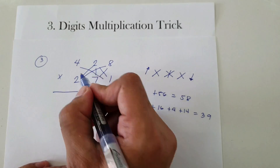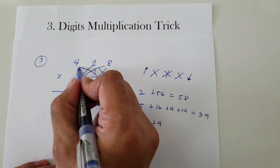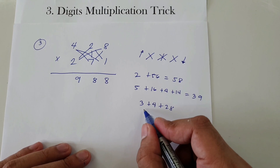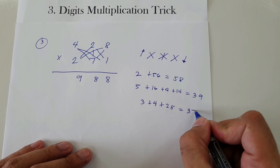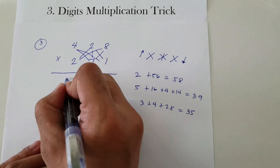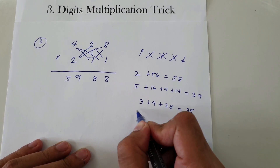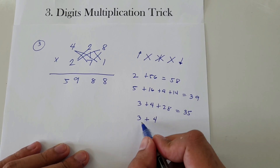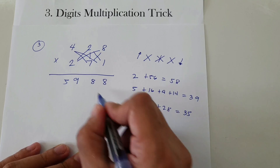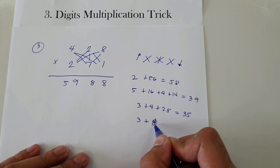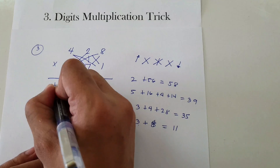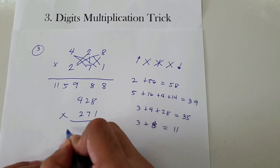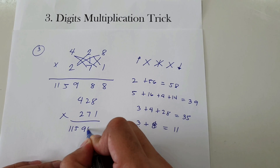Next cross: 2 times 2 is 4, and 7 times 4 is 28. Adding 3 plus 4 plus 28, that's 35. We have 5 here and carry 3. Then up: 4 times 2 is 8, plus 3 carried, that's 11. So therefore, 428 times 271 is 115,988.